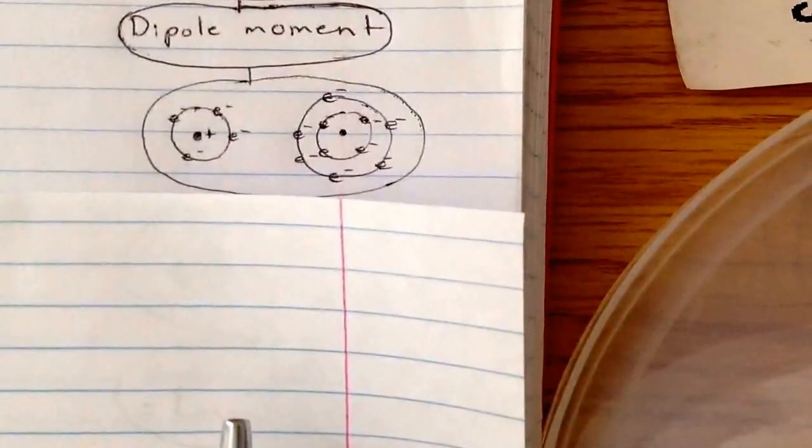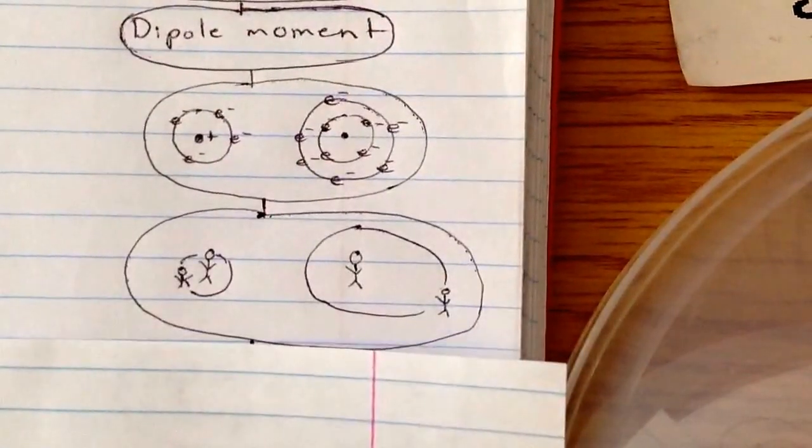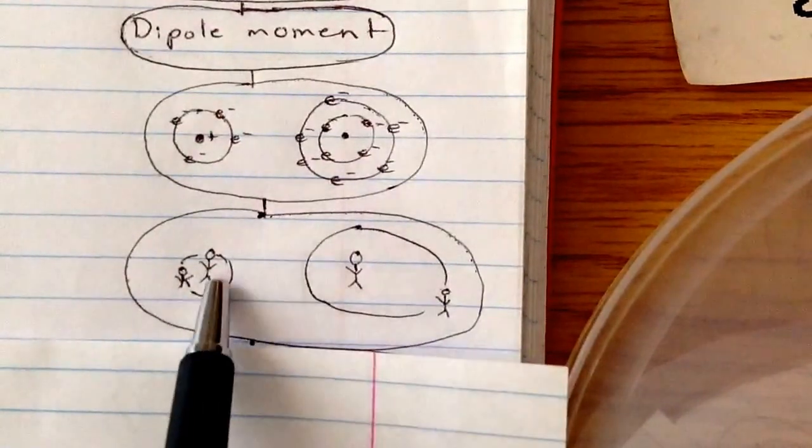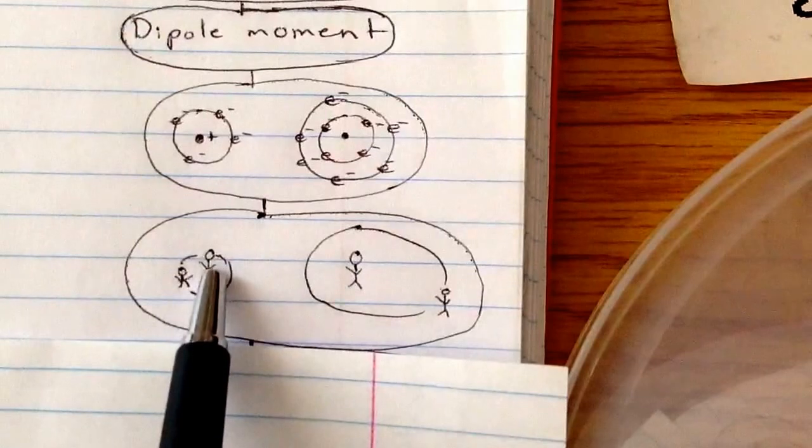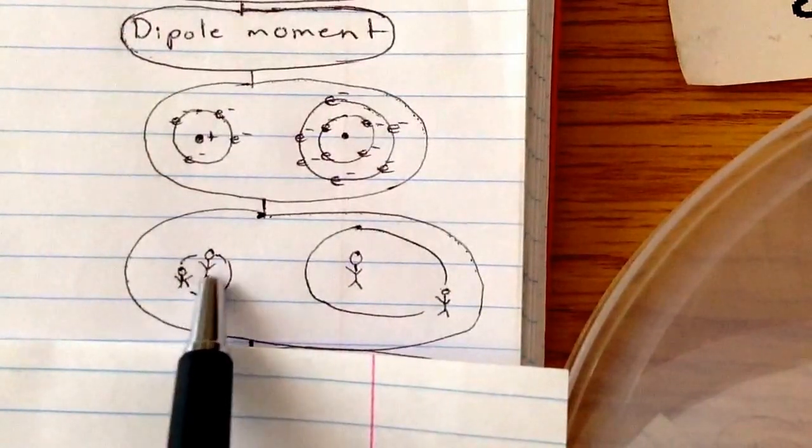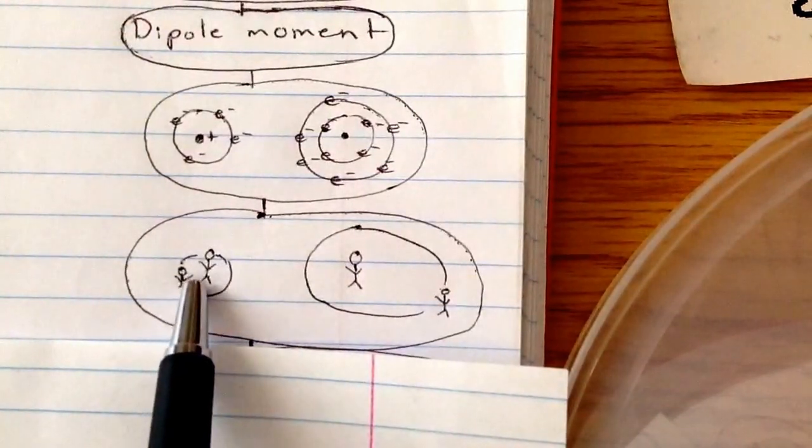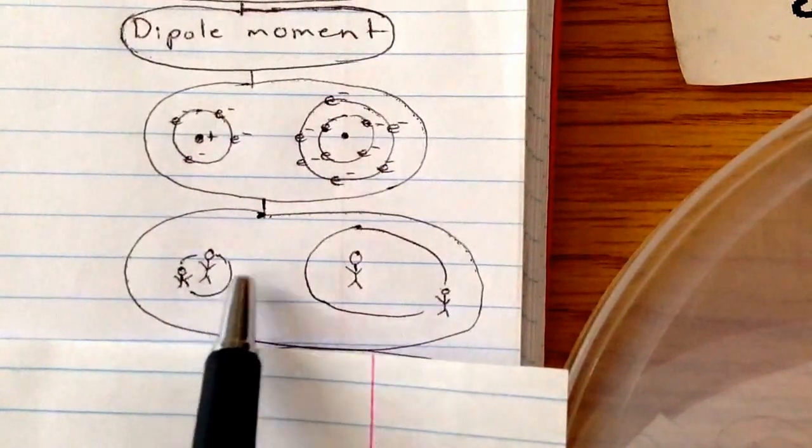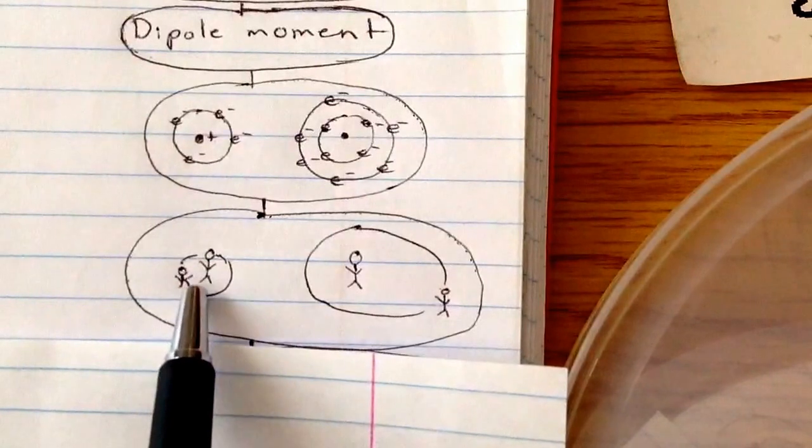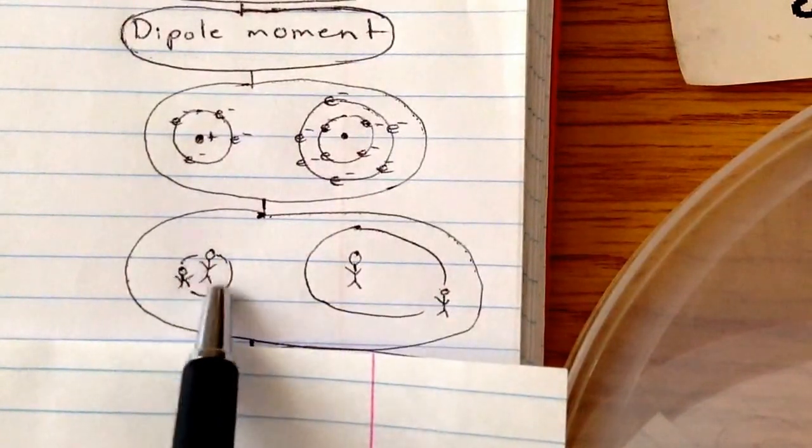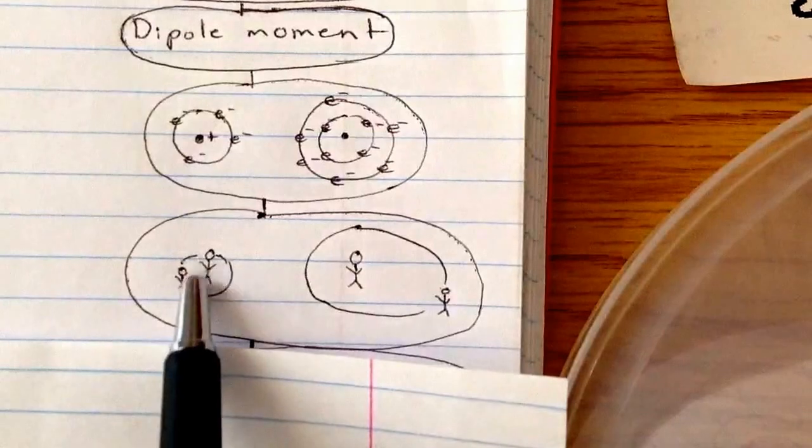So another way to think about it is if you have a parent and a kid. The kid can be the electron and the parent can be the nucleus, the positive charge. So if the parent's holding on to the kid or if the kid's really close to the parent, the parent's going to limit the amount of freedom it has. So the kid can only move so far. So its freedom is limited.